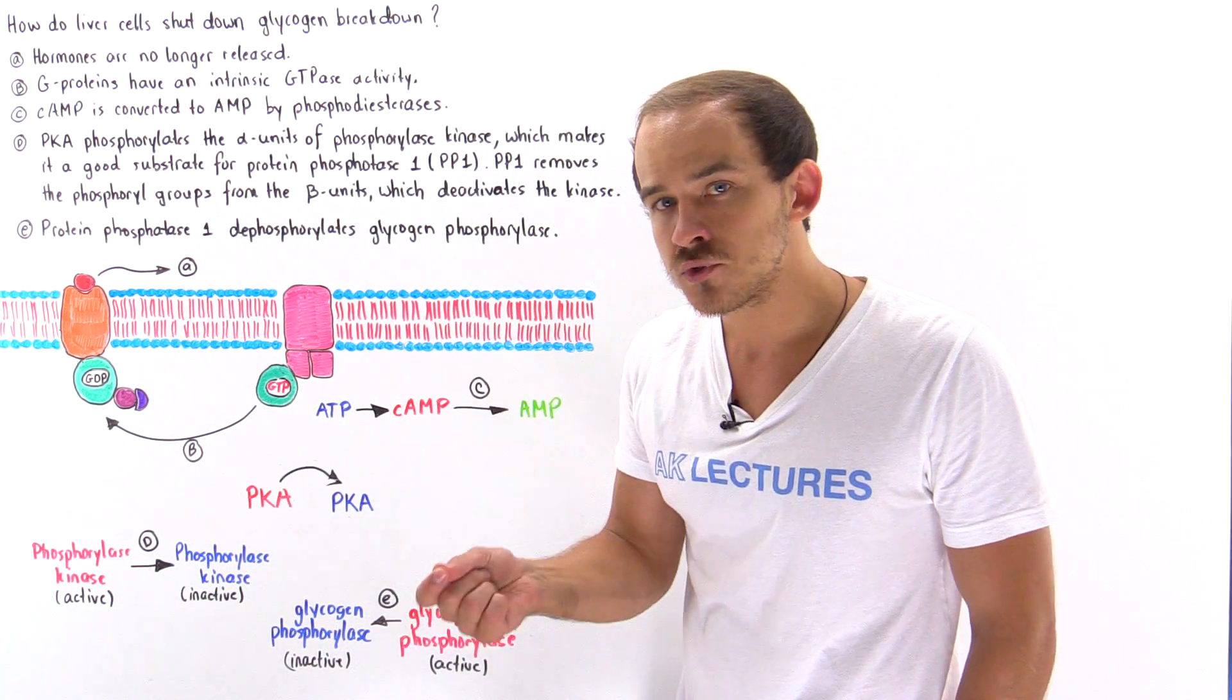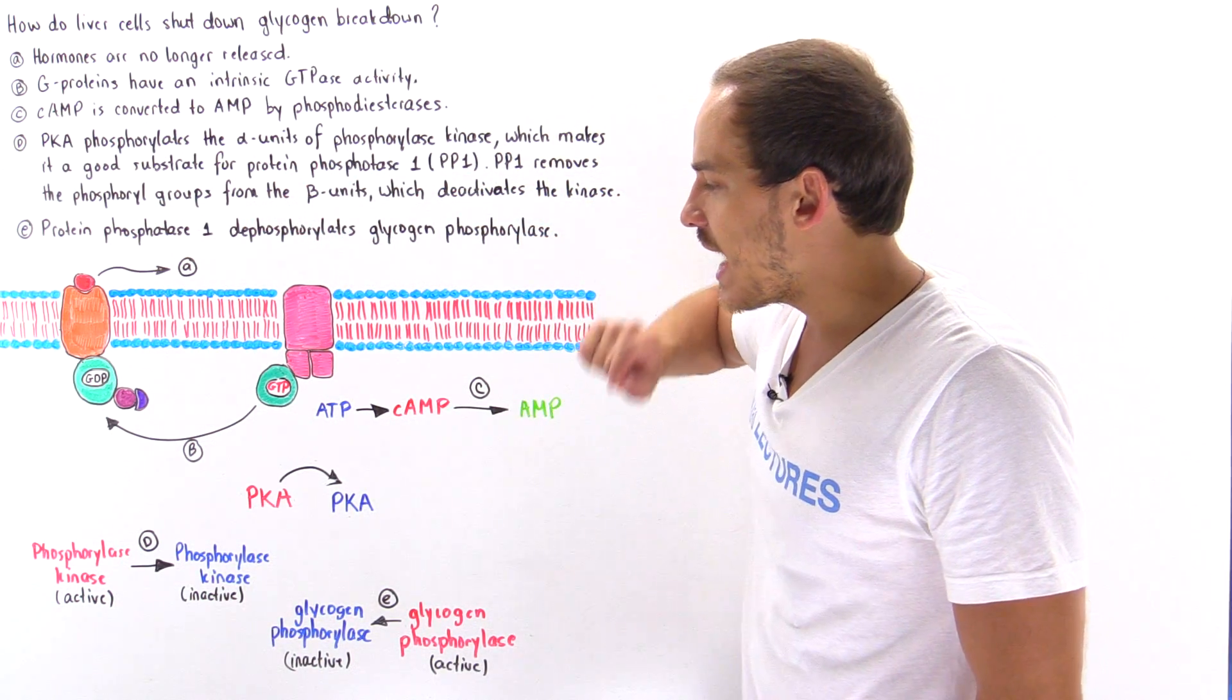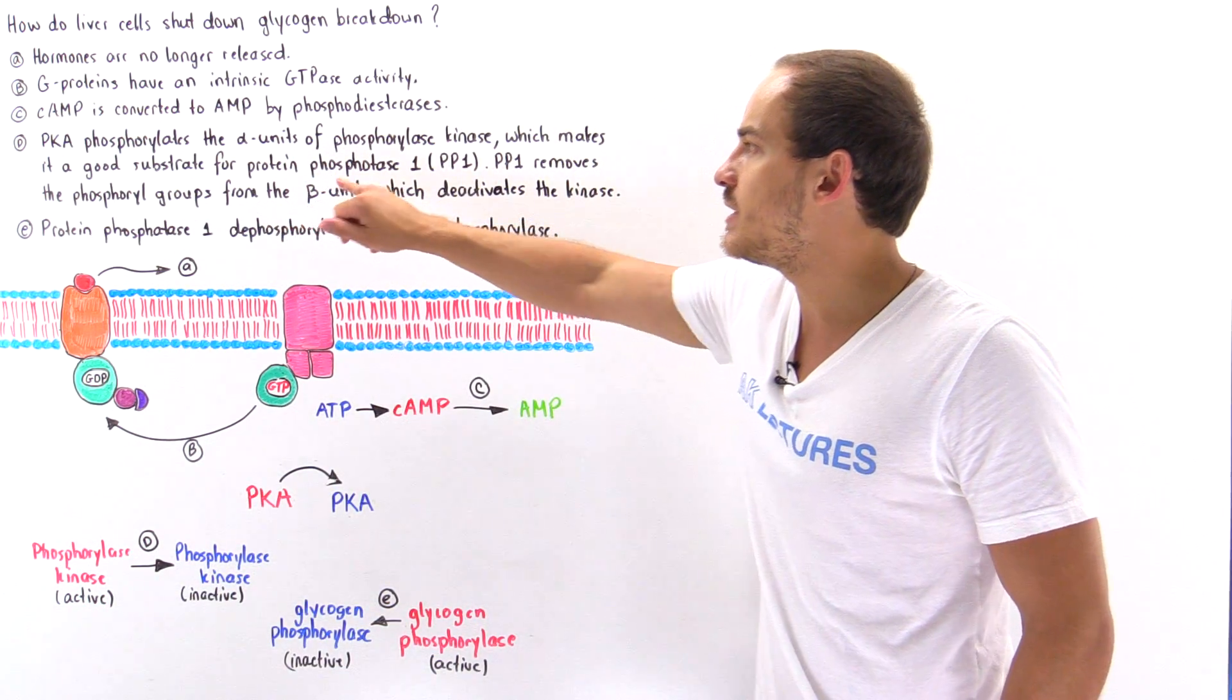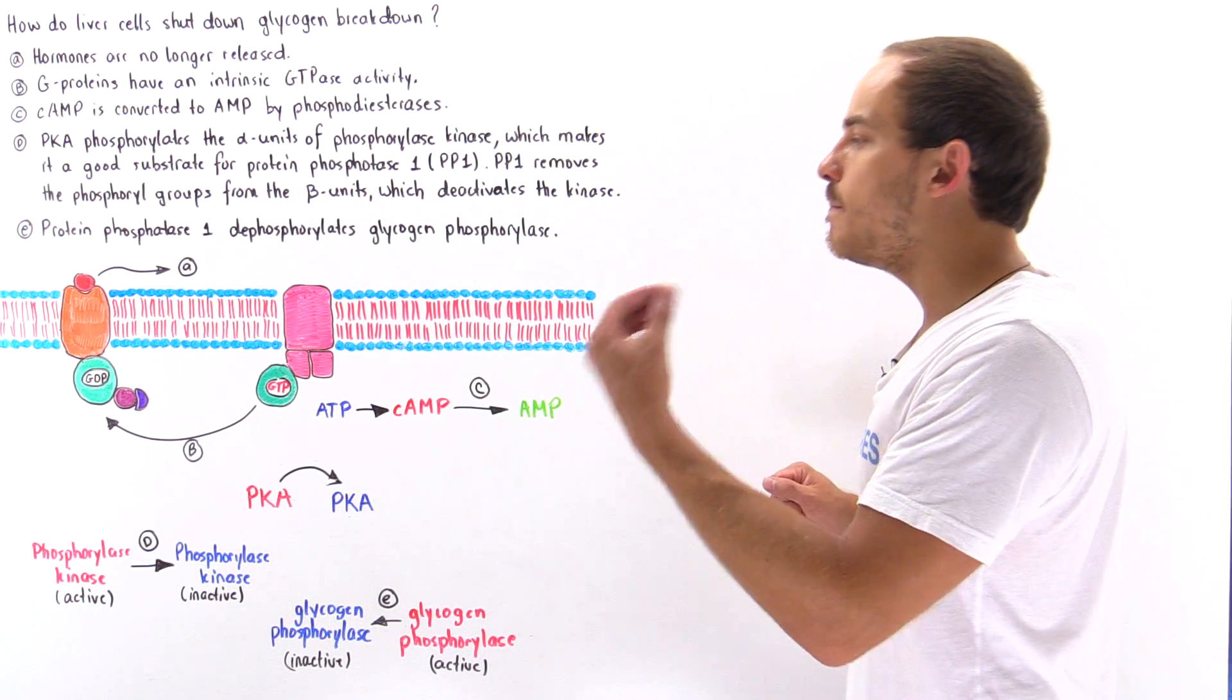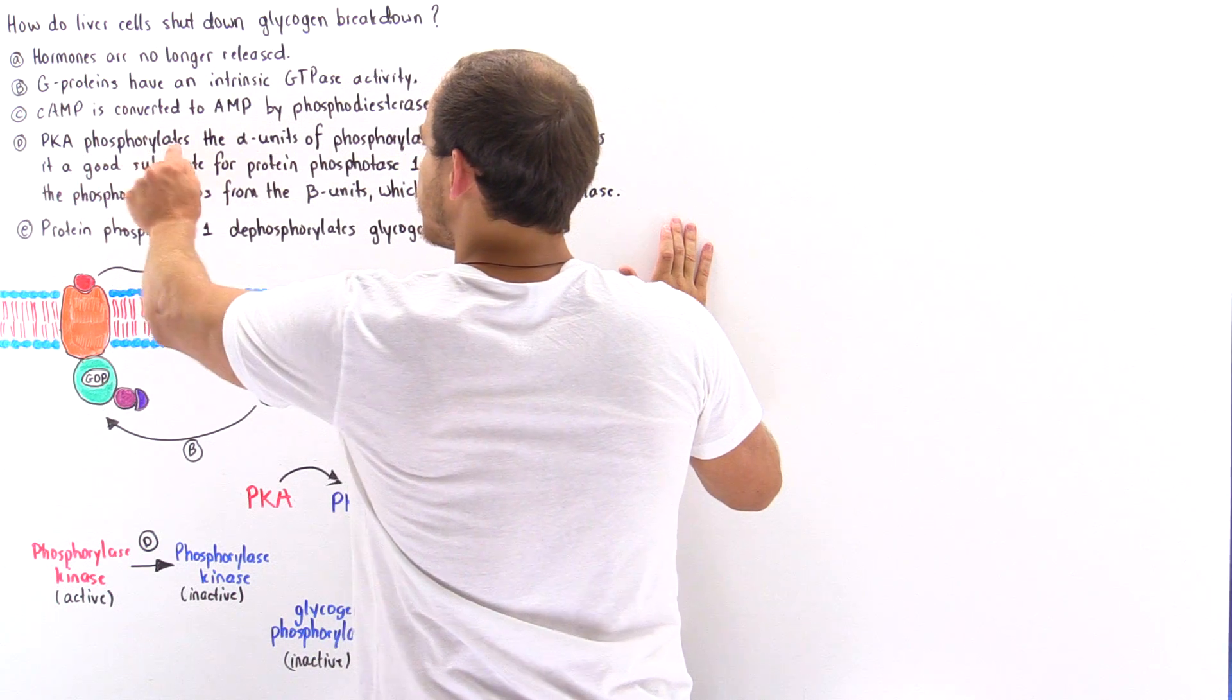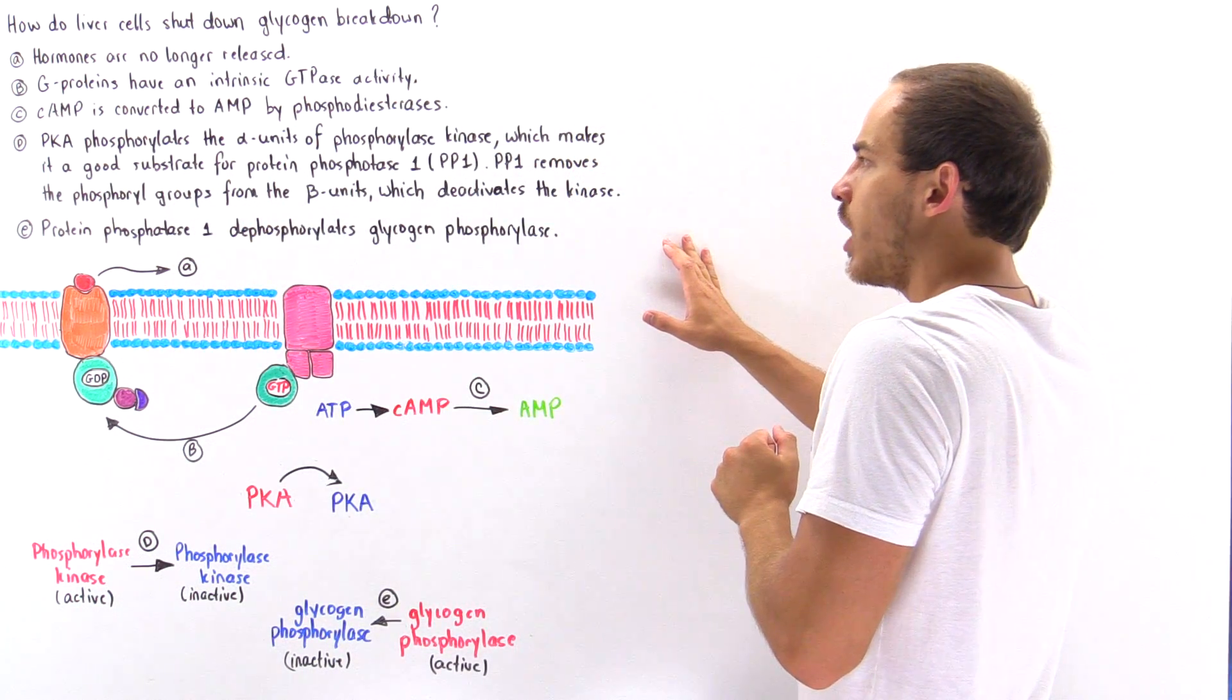Once PKA phosphorylates the alpha subunits, the phosphorylase kinase acts as a substrate to protein phosphatase 1, and protein phosphatase 1 dephosphorylates the beta subunits of phosphorylase kinase, and that inactivates this molecule. So PKA phosphorylates the alpha subunits of phosphorylase kinase, which in turn makes it a good substrate molecule for protein phosphatase 1, PP1. PP1 removes the phosphoryl groups from the beta subunits and this deactivates the kinase.